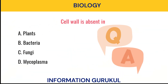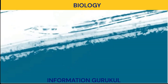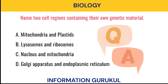Cell wall is absent in? Mycoplasma. Name the two cell regions containing their own genetic material. Mitochondria and plastids.